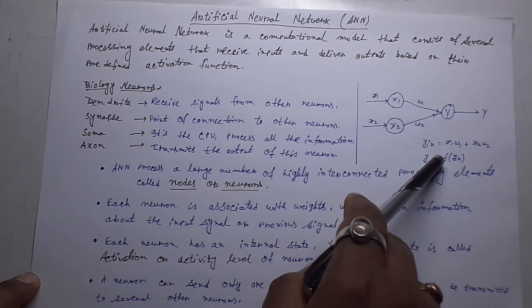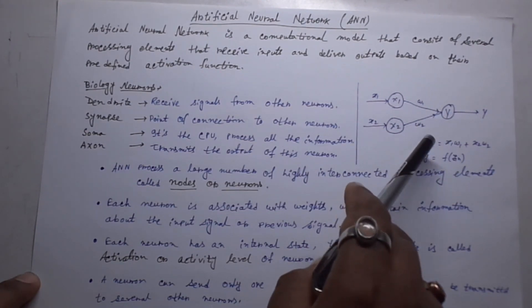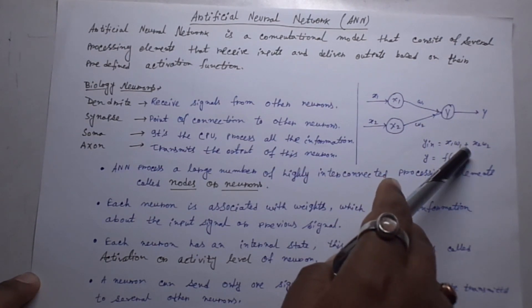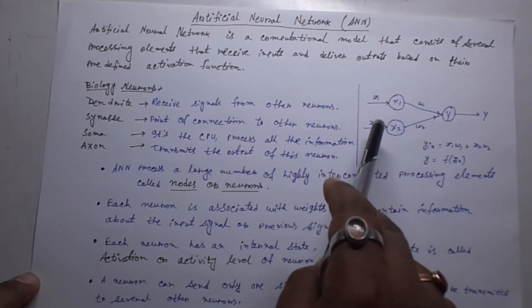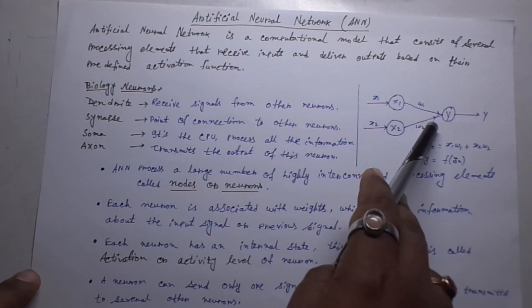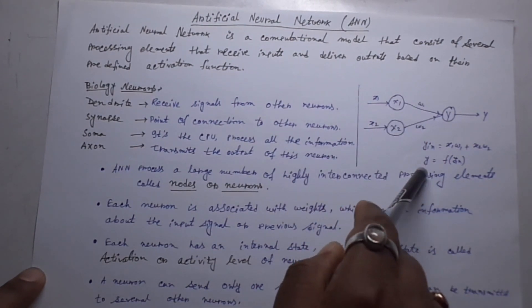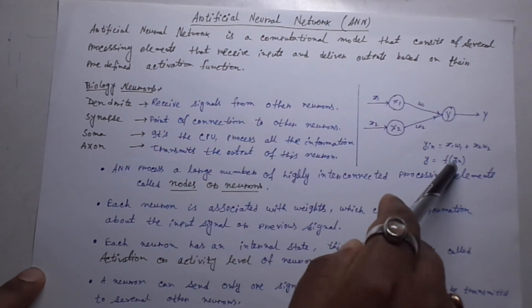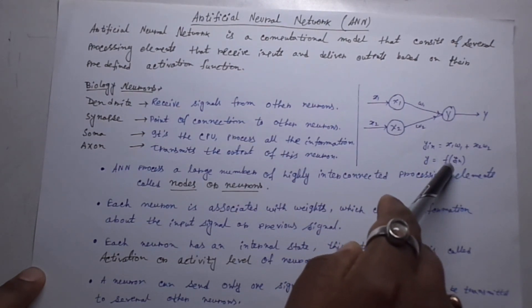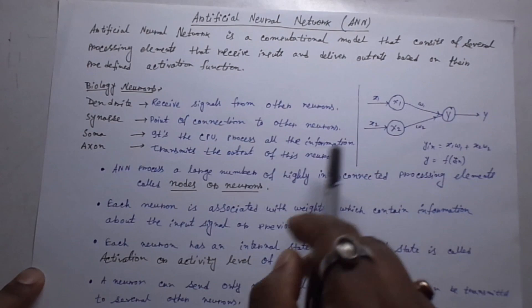This is the mathematical representation of artificial neural network. For input, Y is X1 into W1 plus X2 into W2 and after applying the activation function, we will get the output. That is Y. And this F of Y is the activation function.